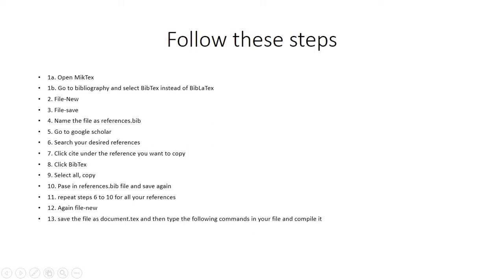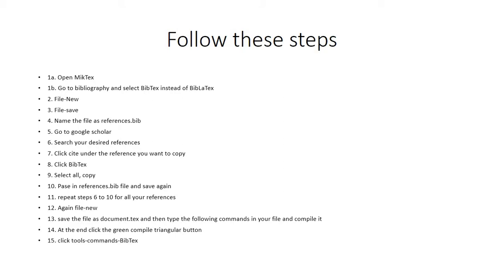Once you save the document as .tex, you will have to type the required commands, which I'll show in the next slide. Then compile the document by clicking the green triangular button at the top of MiKTeX. After that, go to Tools, then Commands, and click BibTeX. After clicking BibTeX, recompile your document and you will see the results.